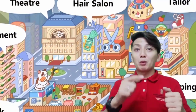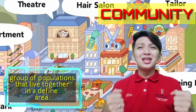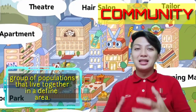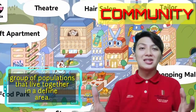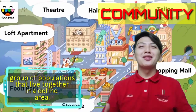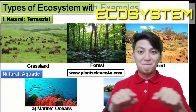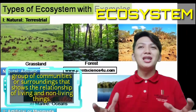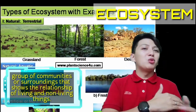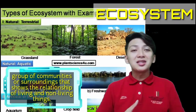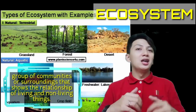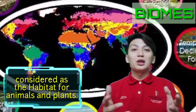A group of populations is what we call number eight: community. A community is populations that live together in a defined area, with a variety of animals and plants found in a specific area. When communities are grouped together, number nine, it can form an ecosystem. An ecosystem involves the interaction between plants, animals, living organisms, and non-living organisms. We can also find different biomes or habitats of different kinds of animals within the ecosystem.